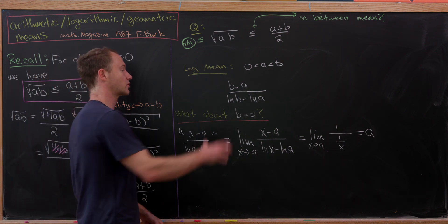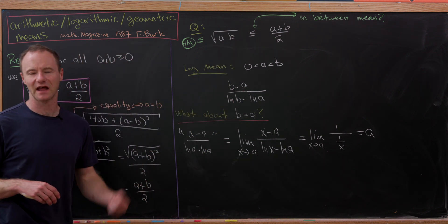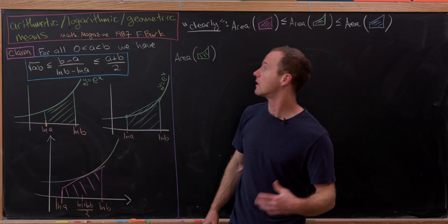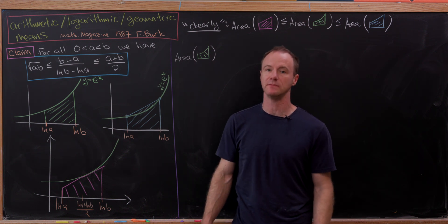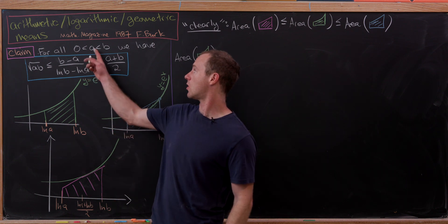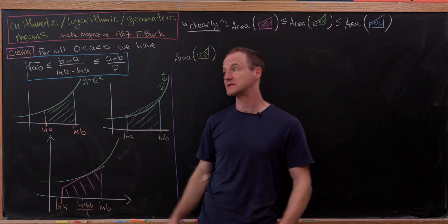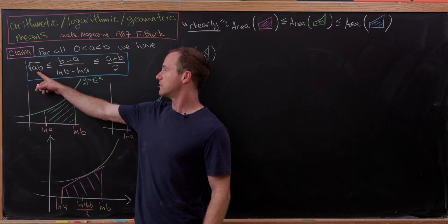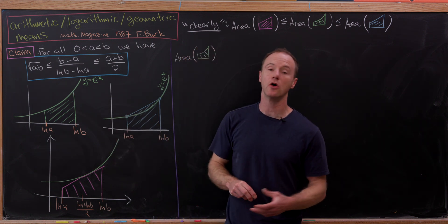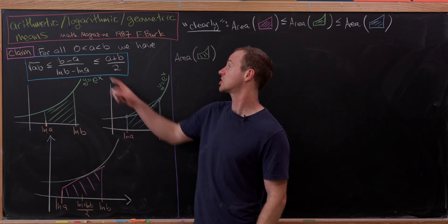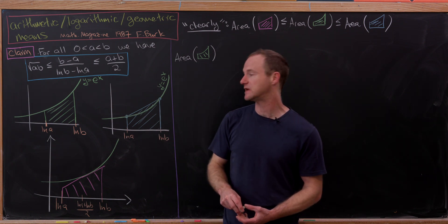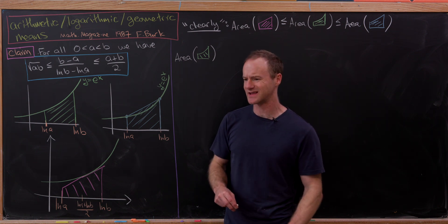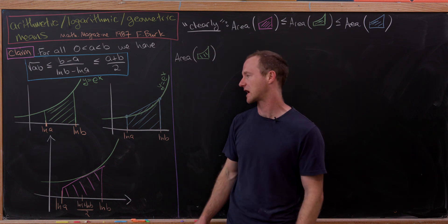Now we're ready for the main goal: to prove the arithmetic-logarithmic-geometric mean inequality. For all positive real numbers a and b with a less than b, we have the square root of ab less than or equal to (b minus a) over (ln b minus ln a), which in turn is less than or equal to (a plus b) over two. We're going to prove this by comparing three areas that are clearly in the correct order.